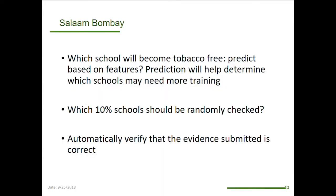The next NGO involved was Salaam Bombay Tobacco-Free Schools. One challenge is to predict which school will become tobacco-free based on some features, because this will help determine which schools may need extra training. They also do random checks of some schools because submitted data may be false — 10% of the schools get monitored. Which 10% should be randomly checked? And automatically verifying whether the evidence submitted is accurate is also a challenge, since some pictures may be duplicates from other schools.